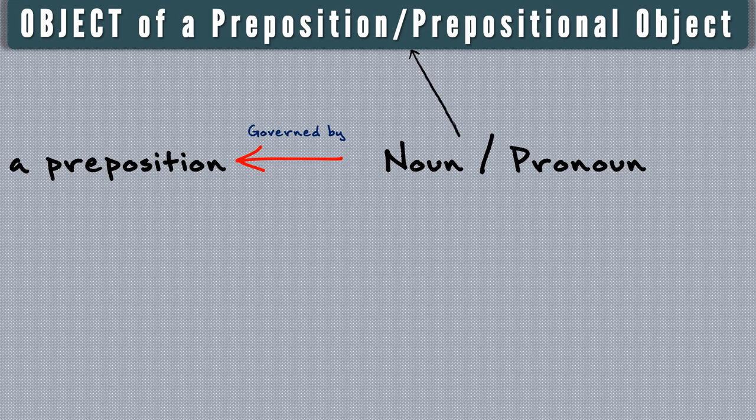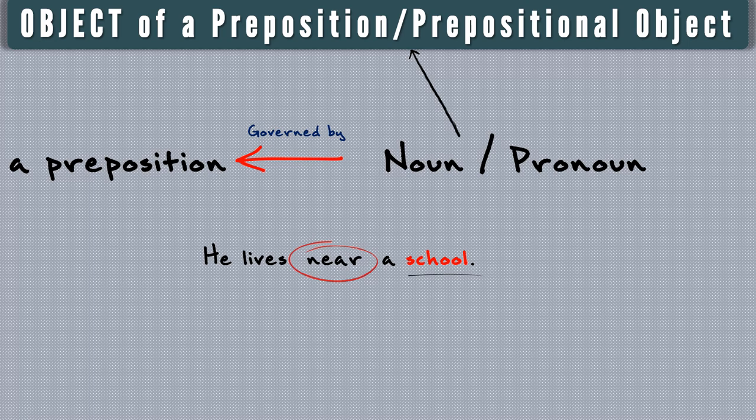Grammarians always focus on the head noun in any noun phrase when detecting the object of a preposition. For example: 'He lives near a school.' Here 'near' is a preposition, followed by the noun phrase 'a school,' whose head noun is 'school.' Therefore, 'school' is the object of the preposition.